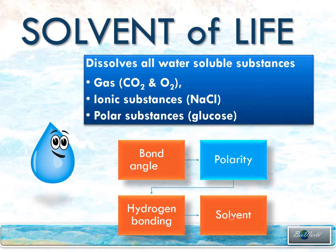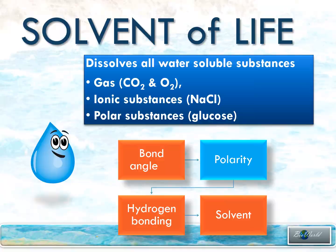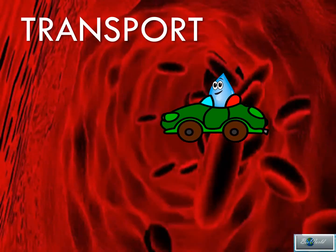So there are three chemical properties and one physical property that enable water to be a solvent of life. Once water dissolves all these molecules in a living system, the second physiological role becomes important. That role is the role of transport.